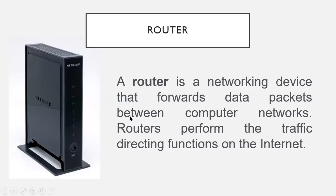There are many routers in the internet. What routers do is forward data packets. When they receive a data packet, they check the IP address. Routers are smart devices because they pass the data packet to the router nearest to the destination. That's what routers do in your computer networks.